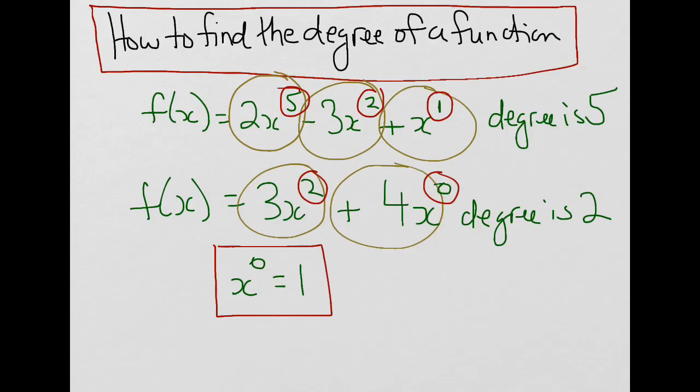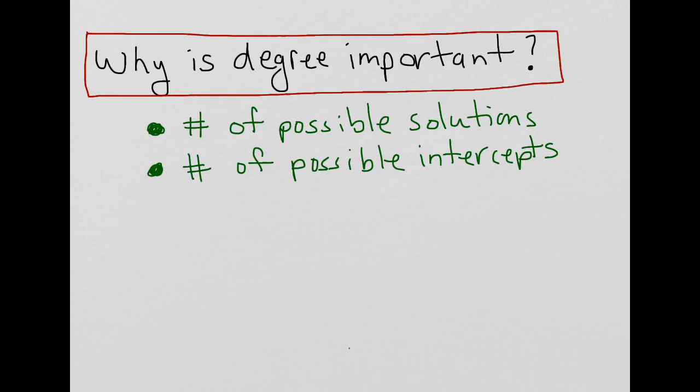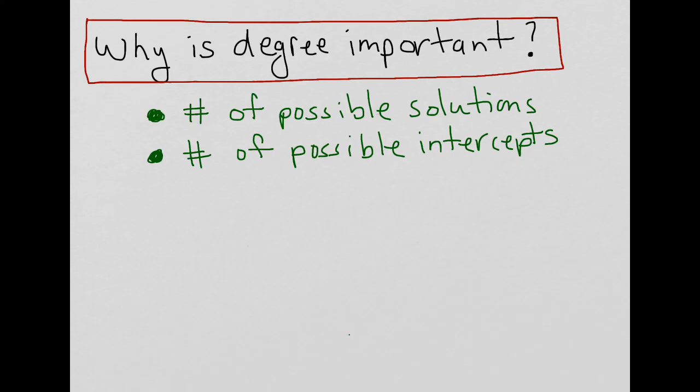Now, why is this important? There are two reasons. The first is that it'll tell us the number of possible solutions of the function, and the second, it'll tell us the number of possible intercepts for the function.